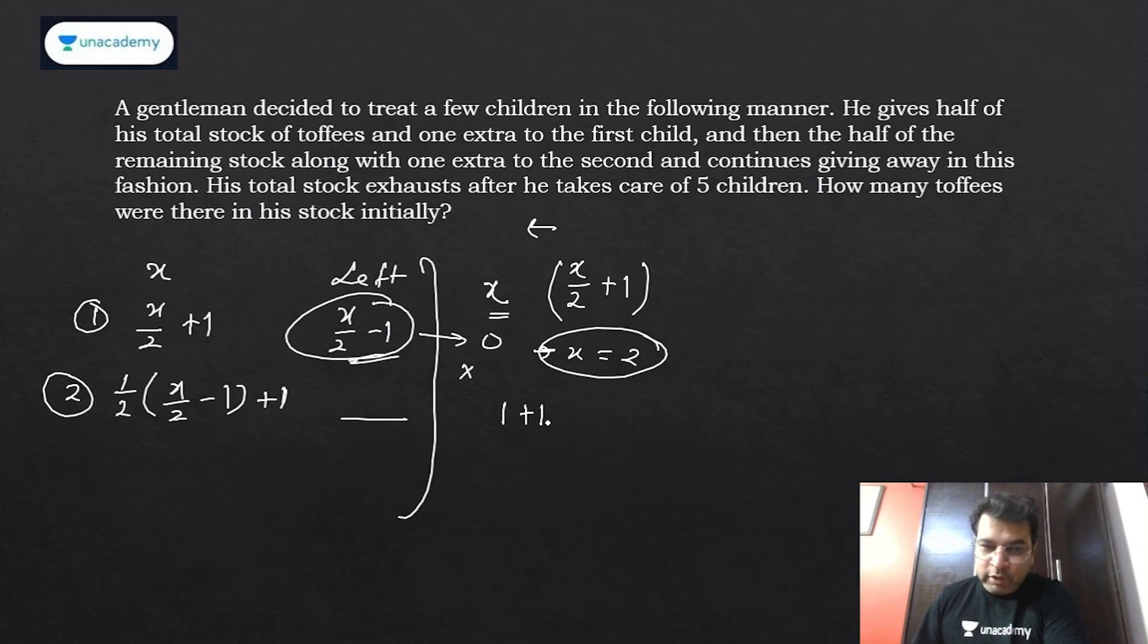Now think: you have two toffees, you gave half of that (one) plus one extra, so you gave him two total. Obviously you're exhausted with your lot. What we're doing is half and then minus one. What is the reverse process of that? Plus one and double. Is this clear?